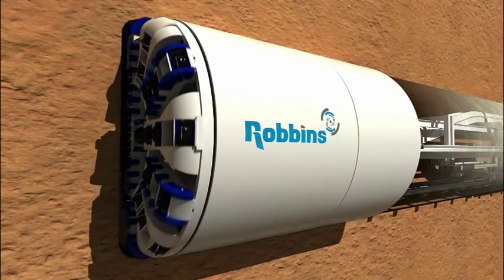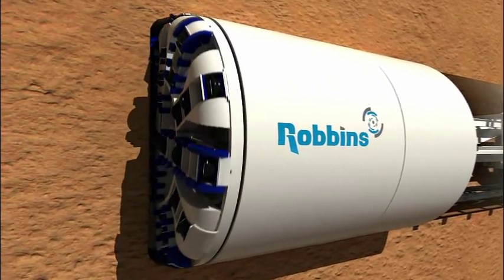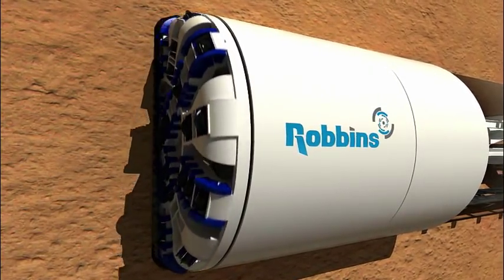This video explains how a typical Robbins EPB excavates in soft ground and why they are the tool of choice for contractors worldwide.